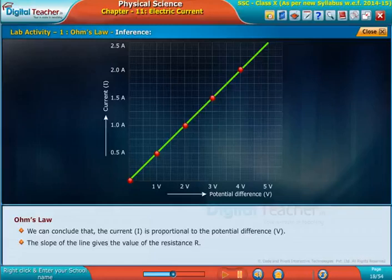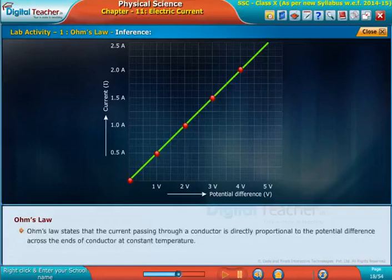Ohm's law states that the current passing through a conductor is directly proportional to the potential difference across the ends of conductor at constant temperature.